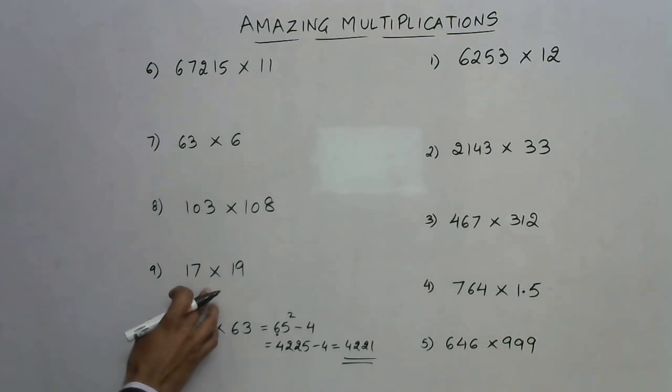Now the second one. How do you multiply numbers which are between 10 and 20? Here we have 17 and 19. What we do is just multiply the unit digits. 7 into 9, obviously you all know that 7 into 9 is 63.